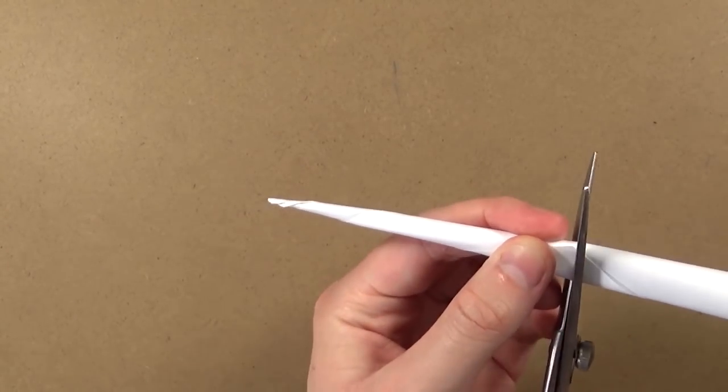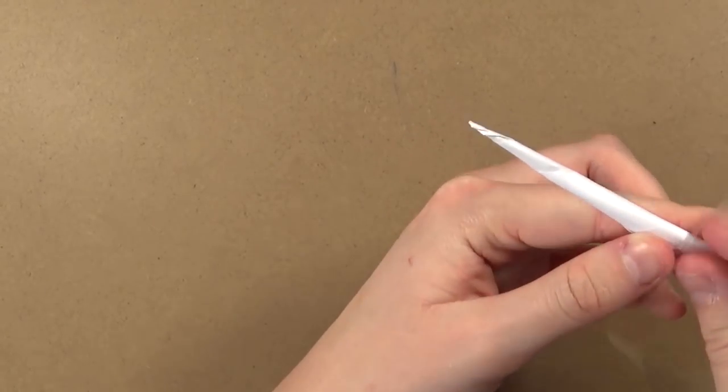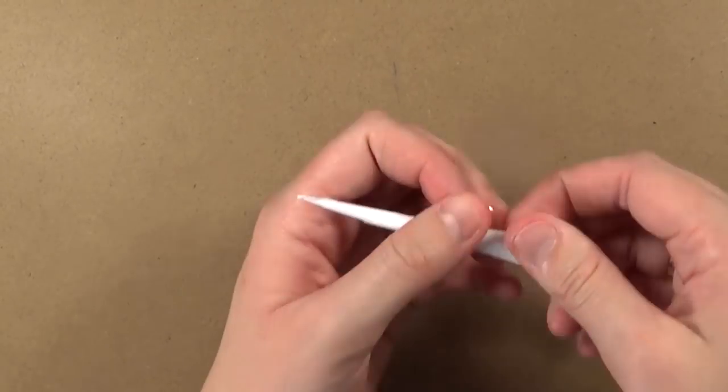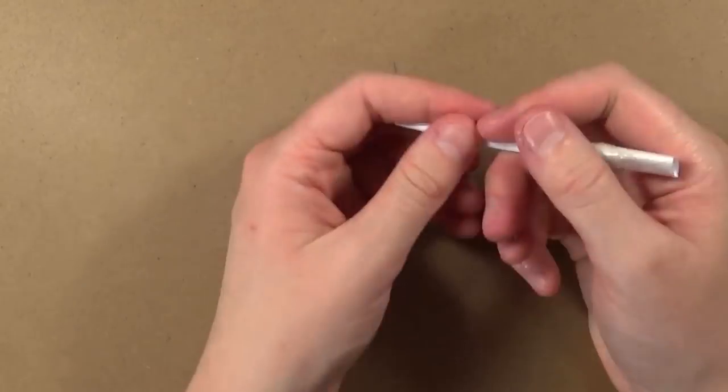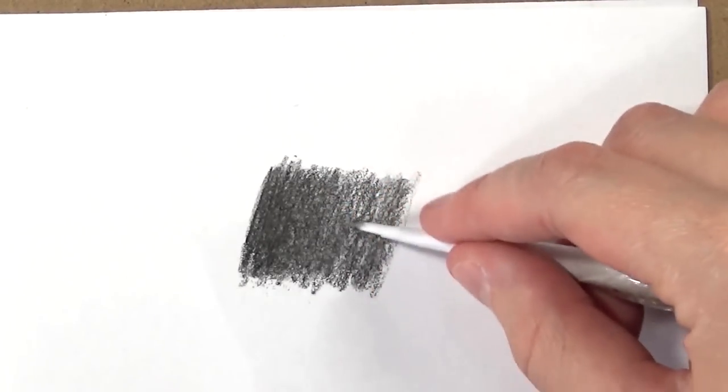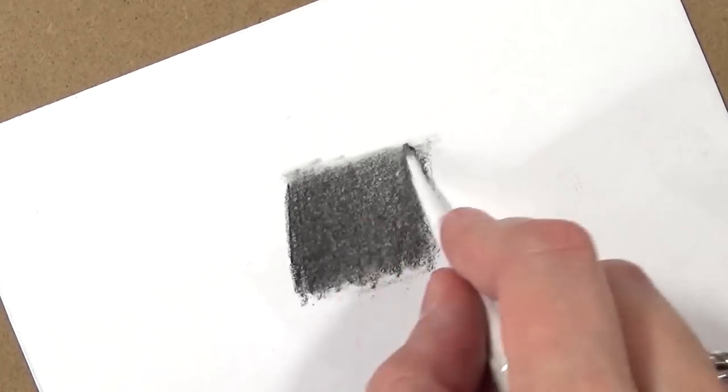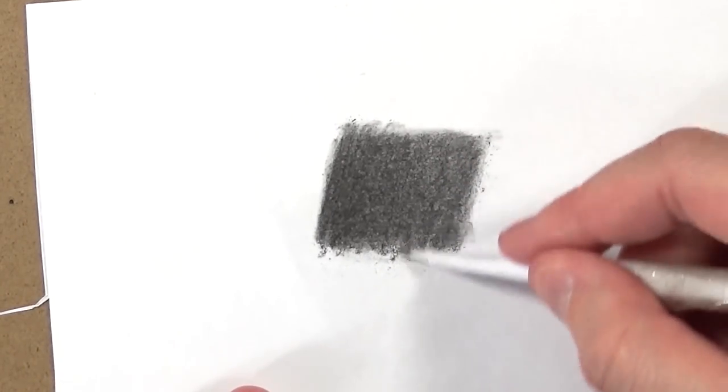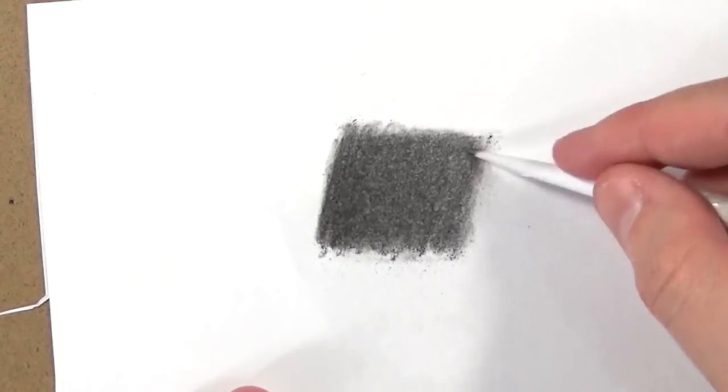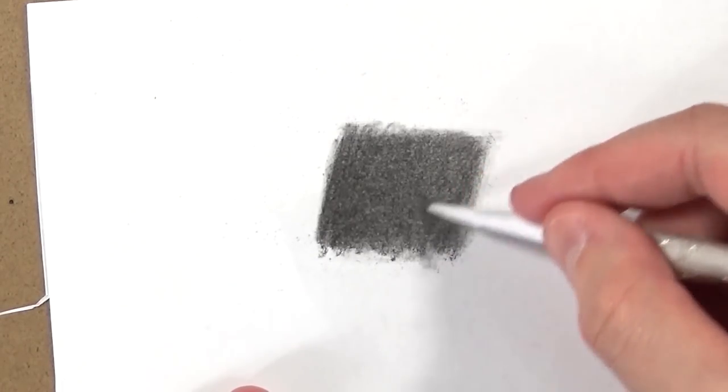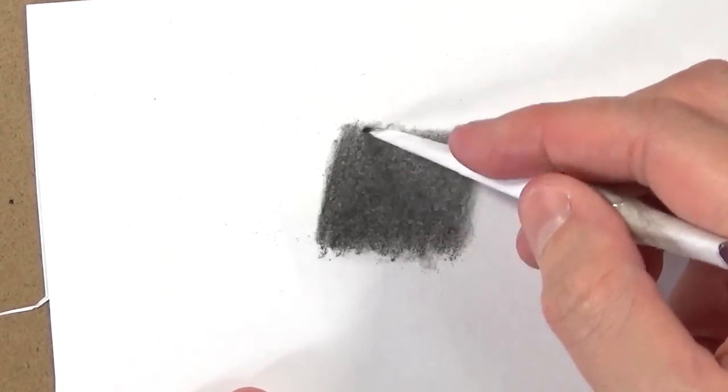I just cut off the excess bit of paper so it wasn't too long and was a bit more easily manageable to use. I just added a bit of tape so that it didn't unravel at the top, but I made sure that I didn't apply the tape down at the bottom because that's where you're blending with. Now I've just put a patch of charcoal on the paper to show you how it blends. As you can see it's really good at just smoothing out that graphite and it's a lot better than using your fingers.